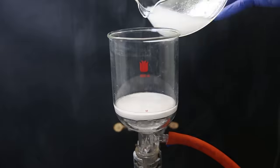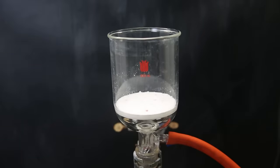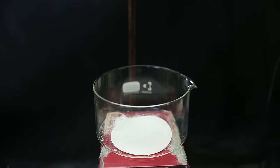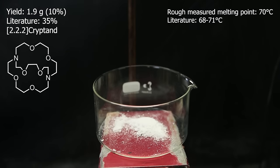I then set this up for filtration, and I washed it with some cold hexanes. I let it dry in the filter for about 15 minutes, and I then move it all to a crystallizing dish. Then I am left with 1.9 grams of what should be 222-cryptand, which is a sad but respectable yield of 10%. I also did a rough measurement of the melting point, which gave 70°C, so it seems to align with the literature.